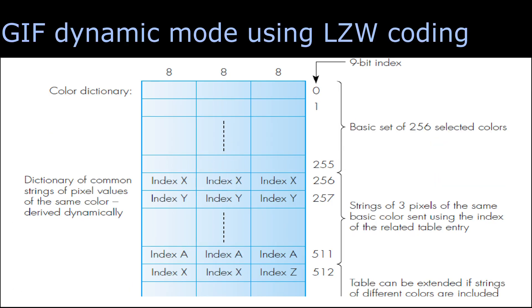The GIF extends dynamically the dictionary using LZW coding. In the diagram, you can see from the location 0 to 255, the dictionary holds the basic 256 selected colors.